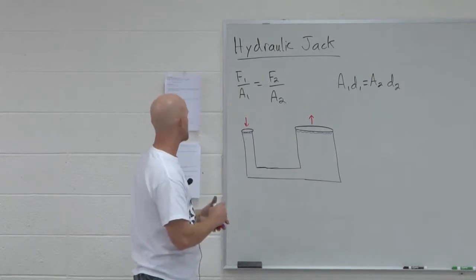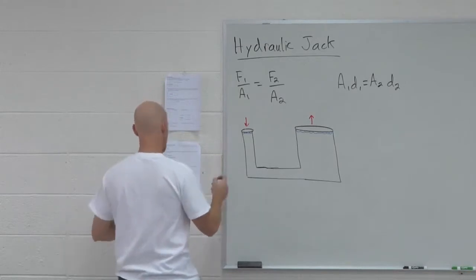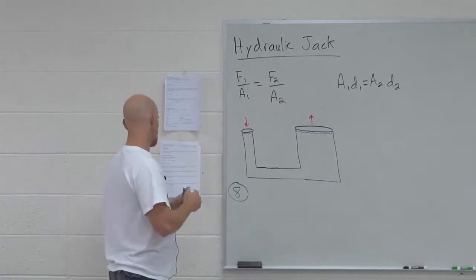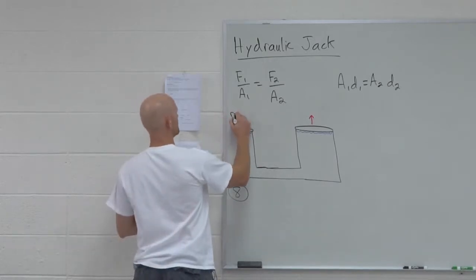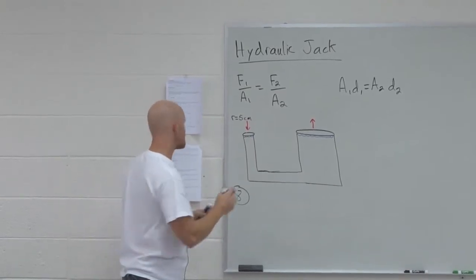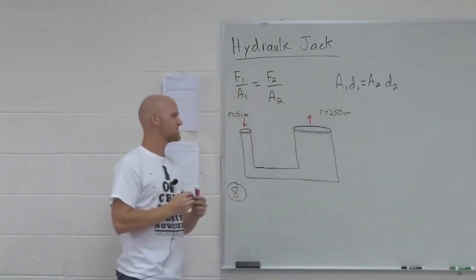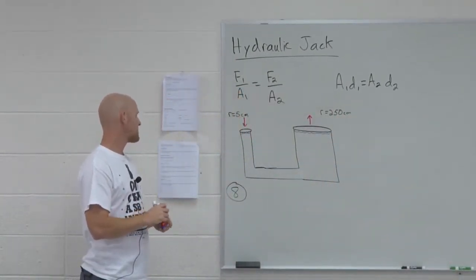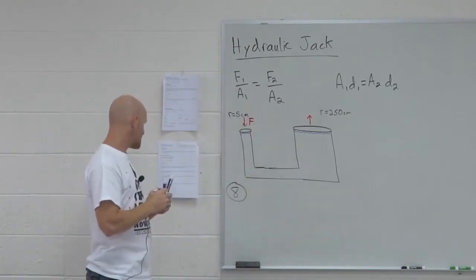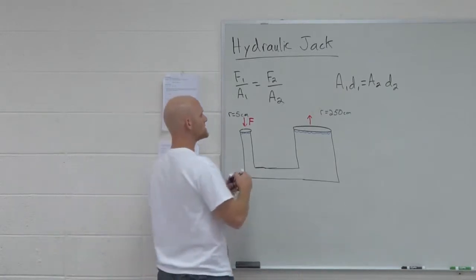Let's look at an example. Looking at example number eight, we have a radius of five centimeters on the small side here. We've got a radius of 250 centimeters on the large side of the jack here. And the question is, how much force must be applied to this small side if we're going to be able to lift a 250 kilogram engine on the large side?